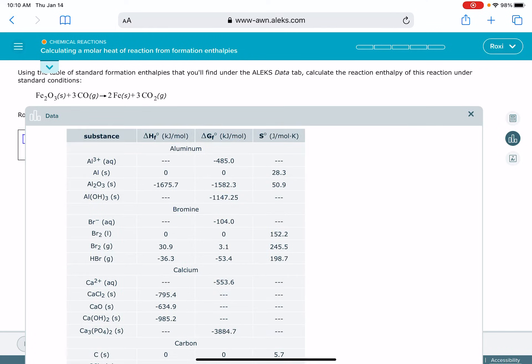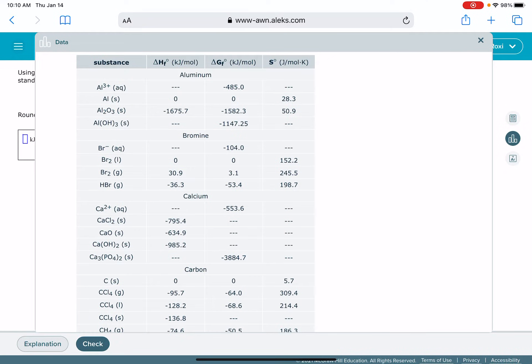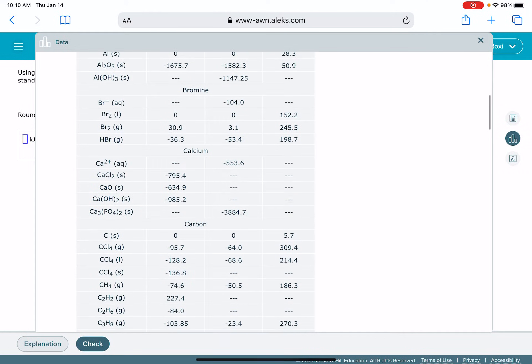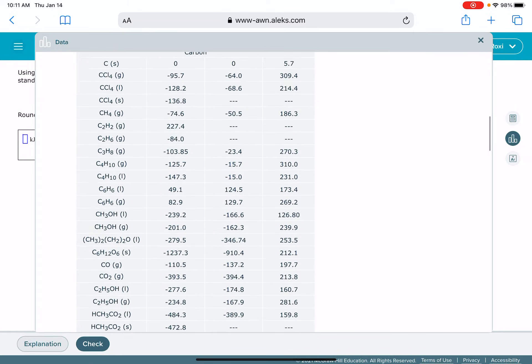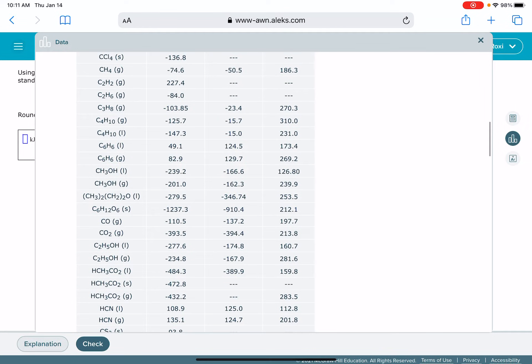Fe2O3, CO, Fe, and CO2. As we're finding these values, not only do we want to make sure that we have the chemical formula right, but we also want to make sure that we're paying attention to the state because that matters.